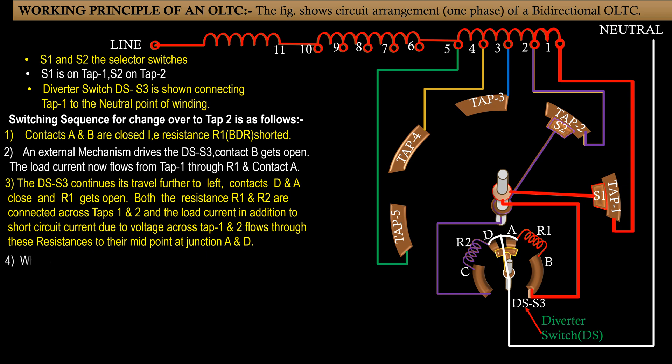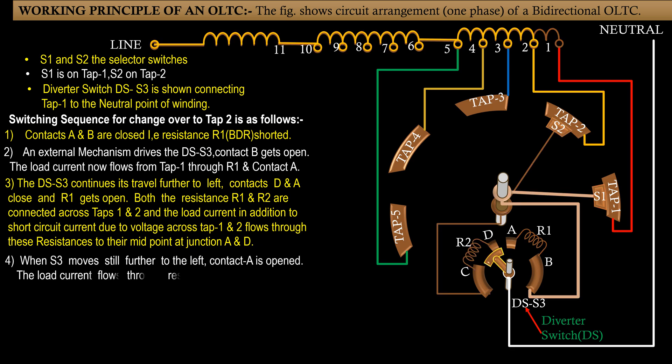Step 4: When S3 moves still further to the left, contact A is opened. The load current flows through resistor R2 and contact D.